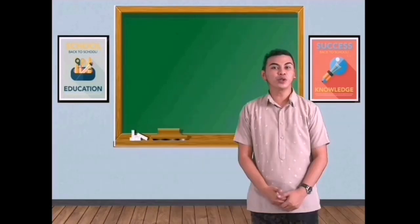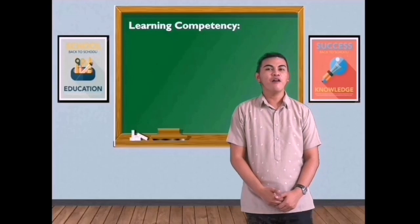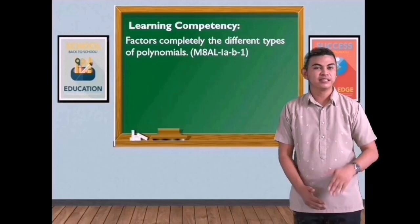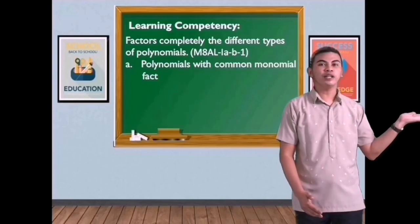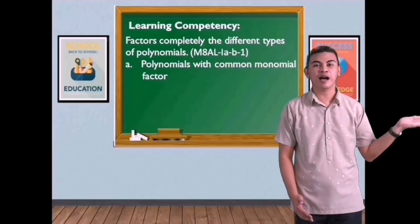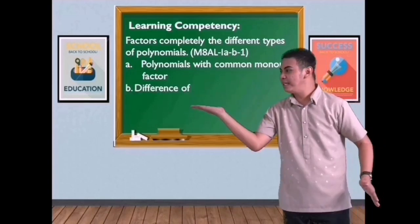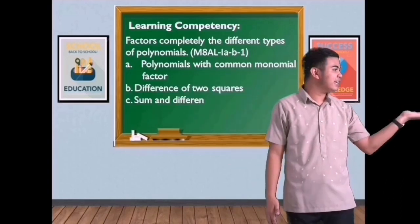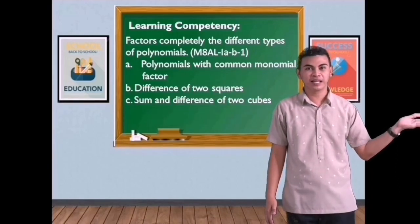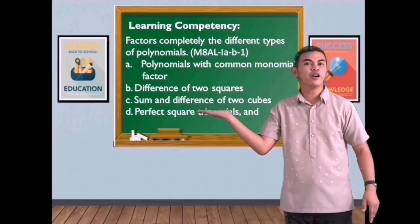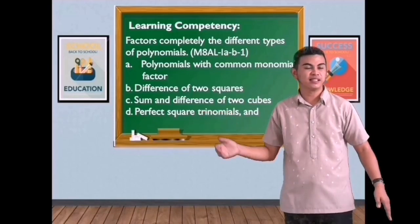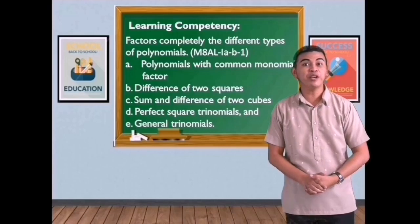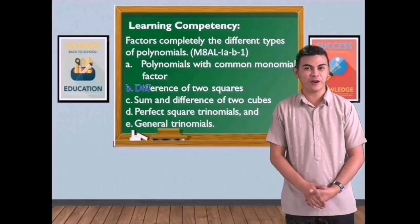Our learning competency: factor completely the different types of polynomials. A. Polynomials with common polynomial factors. B. Difference of two squares. C. Sum and difference of two cubes. D. Perfect square trinomials. E. General trinomials. But we will be focusing on the difference of two squares.